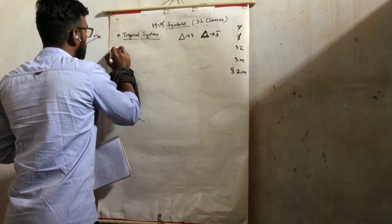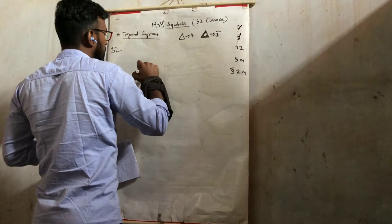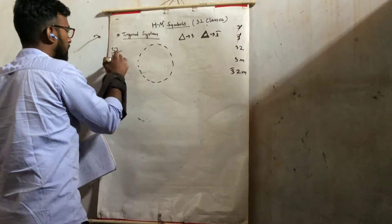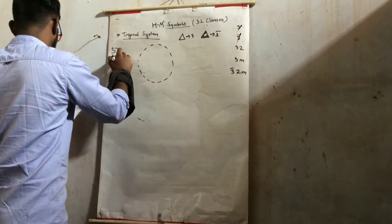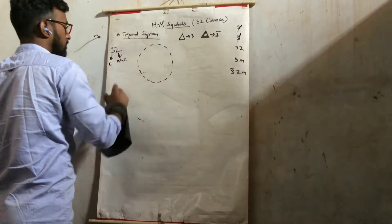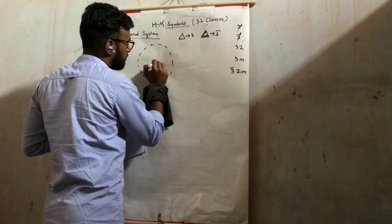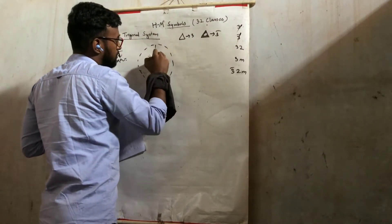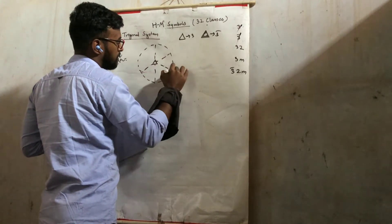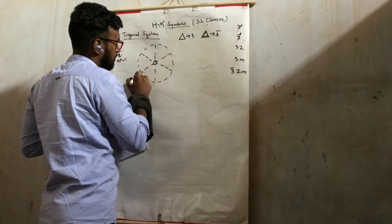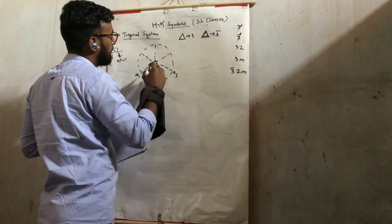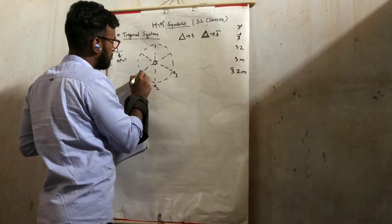For 3,2: similarly, we will have this setup. 3 will be the C axis, and 2 will be the A1, A2, A3 axes. So the C axis is 3-fold, and A1, A2, A3 are 2-fold.